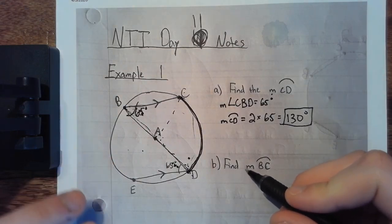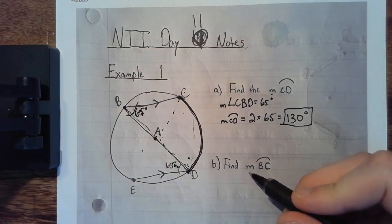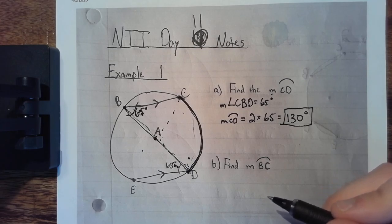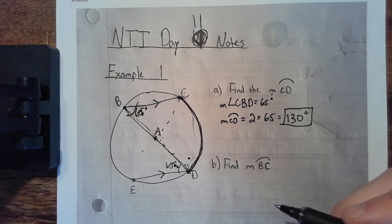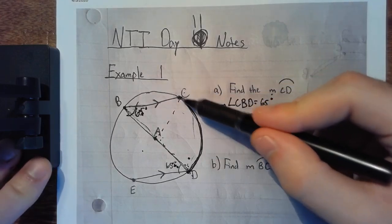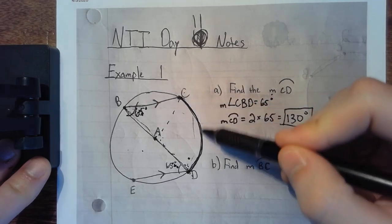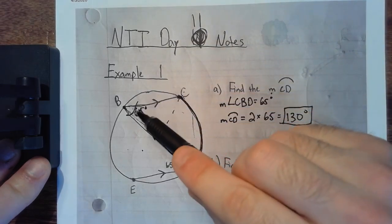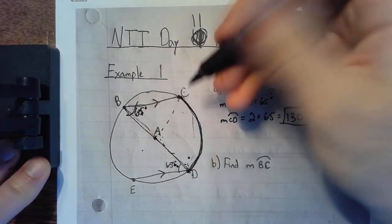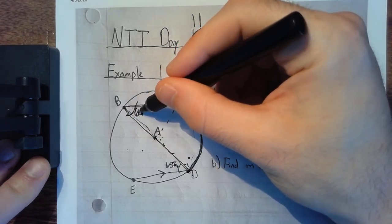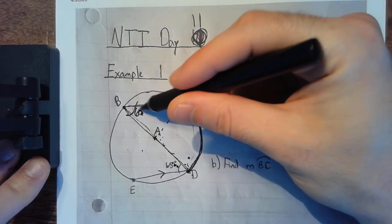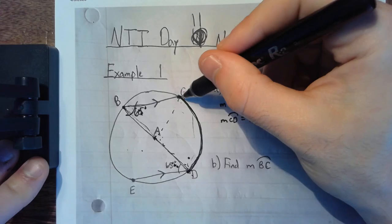So guys, we started with 65 degrees because of alternate interior angles — these are two parallel lines, so the alternate interior angle is 65 degrees. Then you multiply by two because two times the inscribed angle gives you the measure of that arc. Arc CD is two times the inscribed angle, so angle B is 65 and the arc is two times 65.